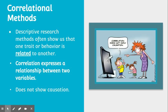Let me first mention what correlational methods are. These descriptive research methods — survey, naturalistic observation, case study — often show us how one trait or behavior is related to another trait or behavior. It just shows a relationship between two variables. A correlation expresses a relationship, a tendency if you will. A correlation does not show causation.